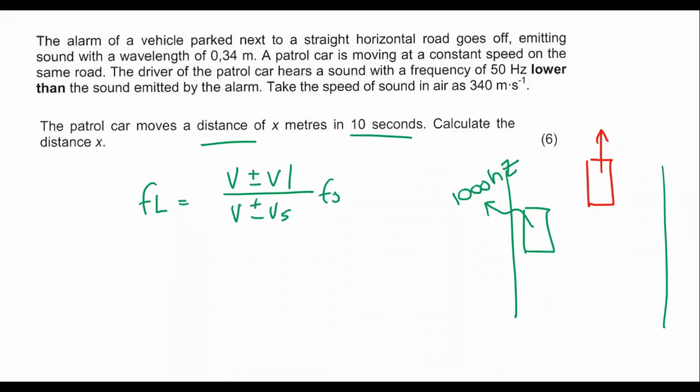Remember what we said, that if they are moving away from each other, you use a negative at the top and a positive at the bottom. So my formula will now look like that. The frequency of the listener, who's the police officer, equals 340 minus the velocity of the police car over 340 plus the velocity of the source. The source would be the alarm system, and that car is not moving. It says that the alarm is parked. So if you're parked, you're not moving, so that would be zero.